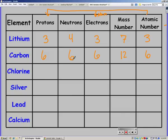So carbon, you should have had 6 protons, 6 neutrons, 6 electrons, a mass number of 12, an atomic number of 6. For chlorine, we had an atomic number of 17, a mass number of 35, 17 protons, 18 neutrons, and 17 electrons.